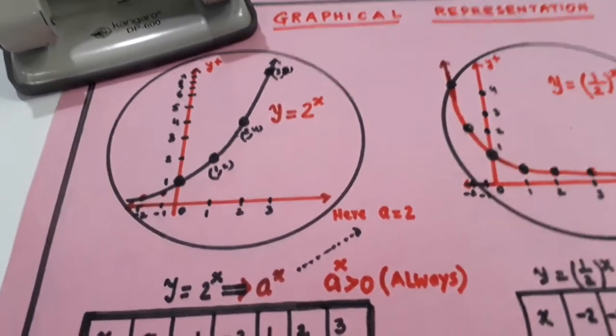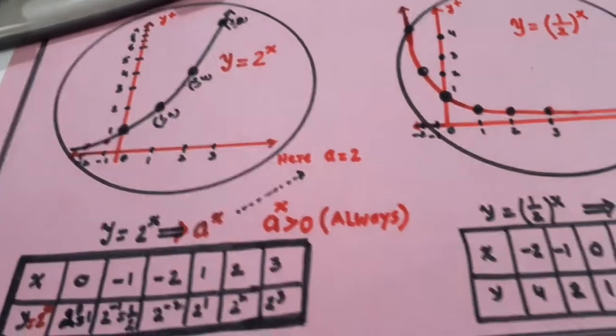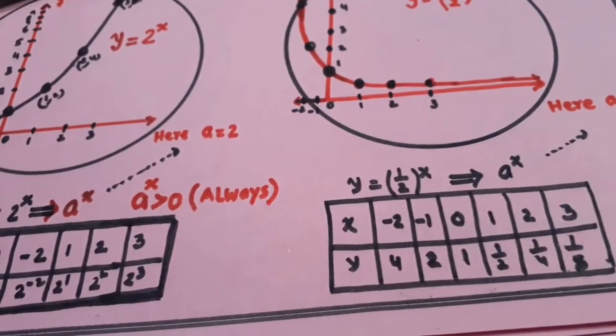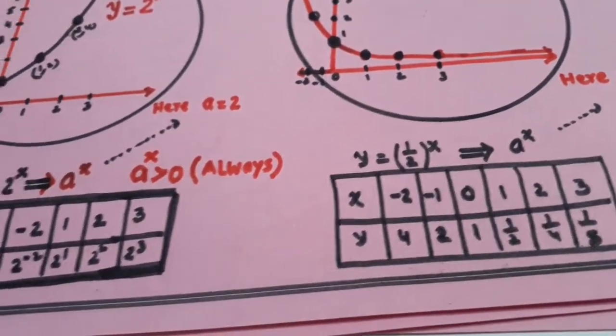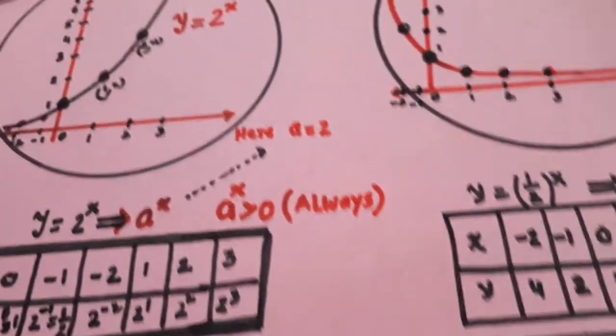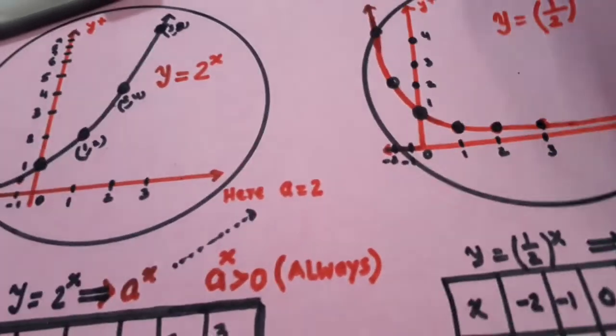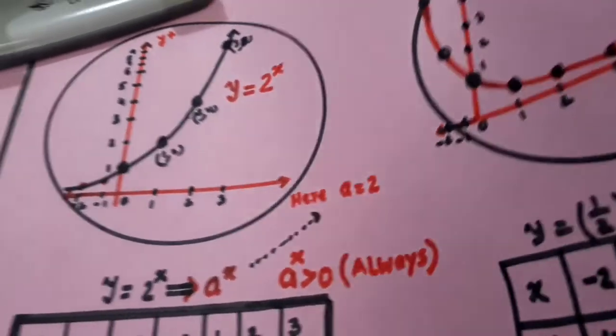The point is, in exponential function, x can be negative, but y is always positive. Y is always positive. Now this is a graph, it goes up or goes down, depending upon the value of a.